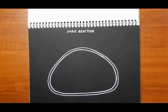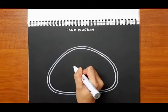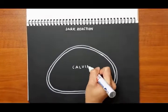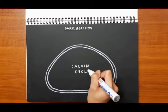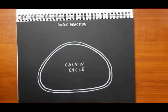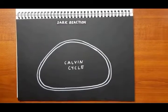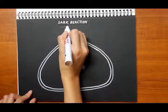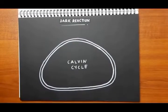There is a second stage of photosynthesis called the dark reaction, which is also known as the Calvin cycle. How does photosynthesis occur at night? The process is called the dark reaction.